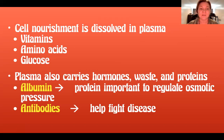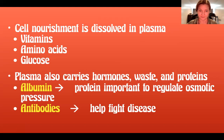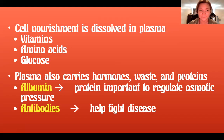Plasma also carries hormones, waste, and proteins. Two examples of proteins in the plasma are albumin — which is important for regulating osmotic pressure — and antibodies, which are proteins that help fight disease.